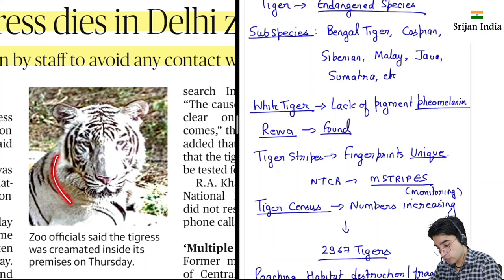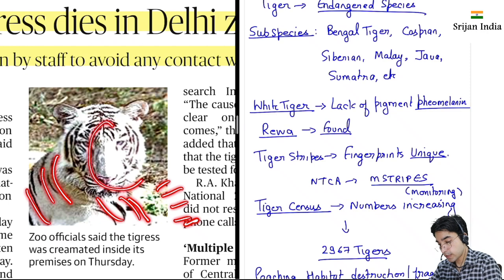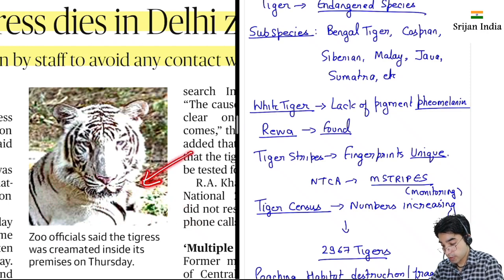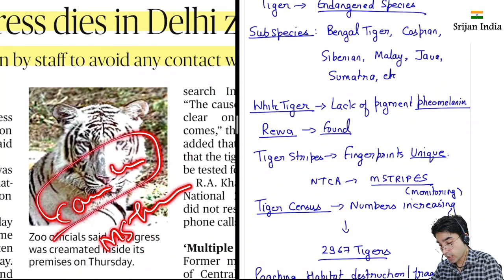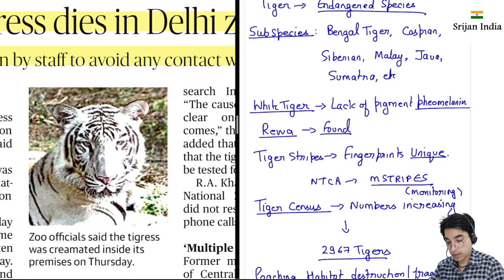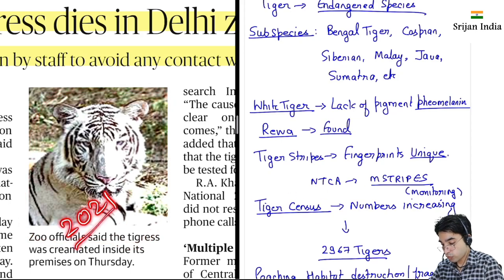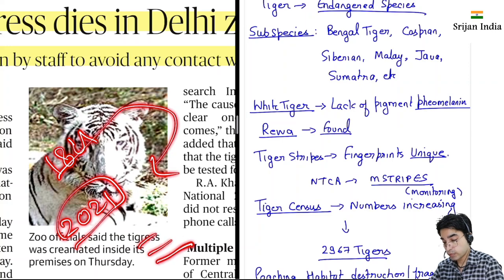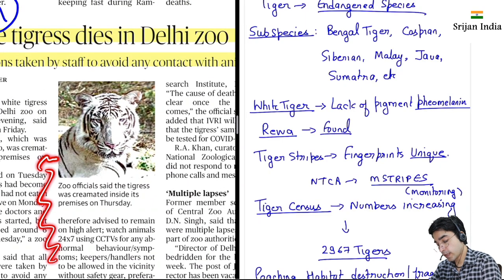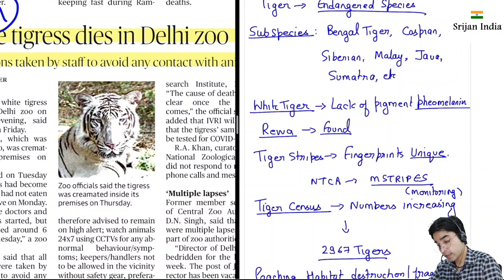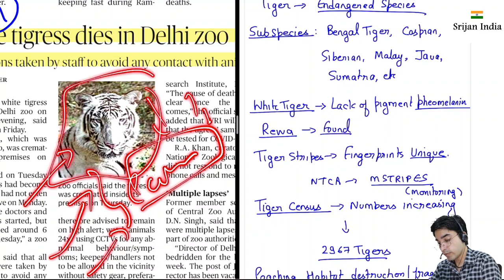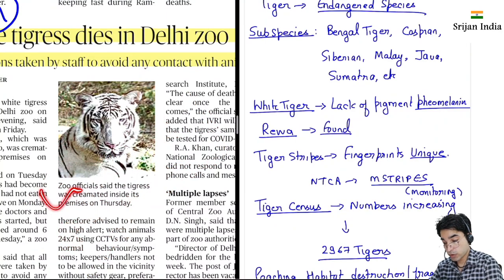Yeh jo tigers hote hai, inke jo stripes hai, yeh unique hote hai — jaise hamare fingerprints unique hote hai, aise inke stripes bhi unique hote hai. Inse uniquely identify kiya jata hai. That is why camera trap and all techniques use karte hai — NTCA use karti hai, National Tiger Conservation Authority, to count aur sense these tigers. Tiger census bhi hota hai — 1881 se chal raha hai. Ek time pe India mein bahut zyada tigers hote the, phir poaching aur all hua. Ek time tha India mein keval 1411 tigers bache the. Phir humne apne efforts increase kiye — aaj jo last year aaya census, usmein 2,967 tigers hai.